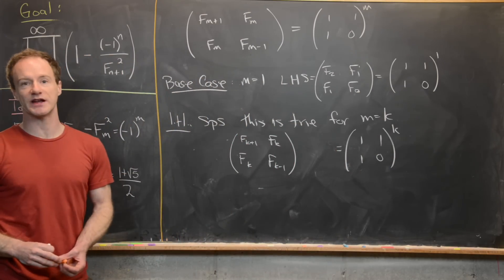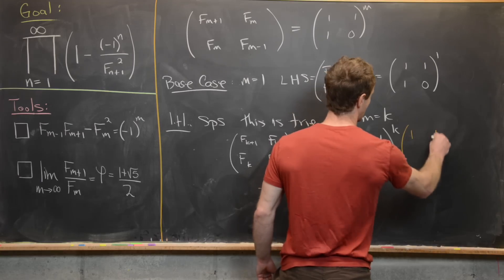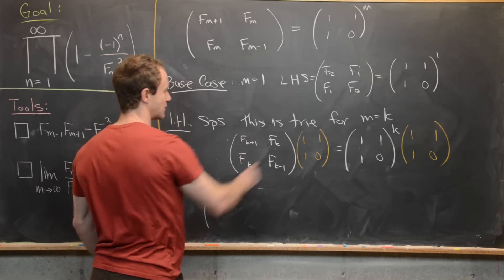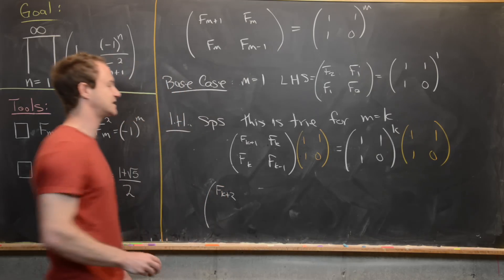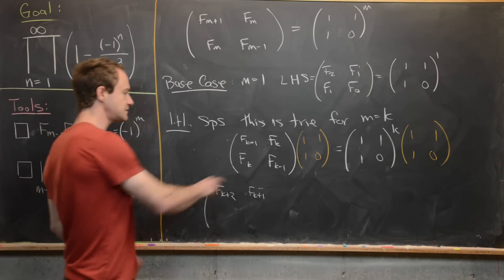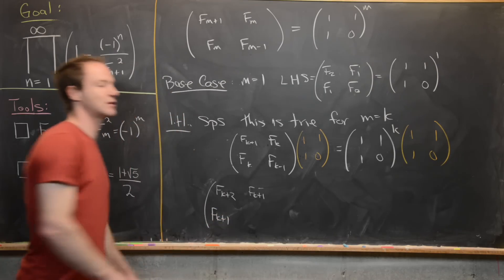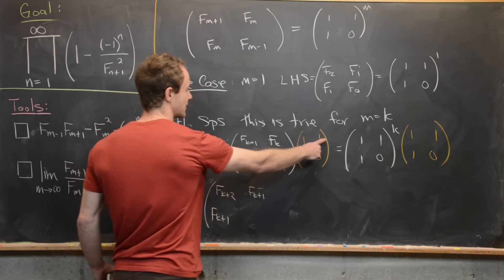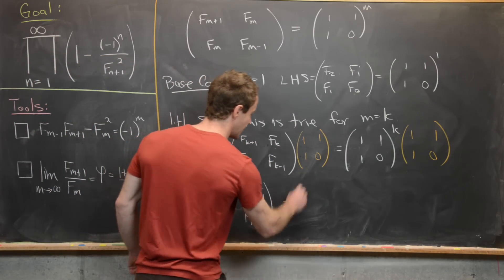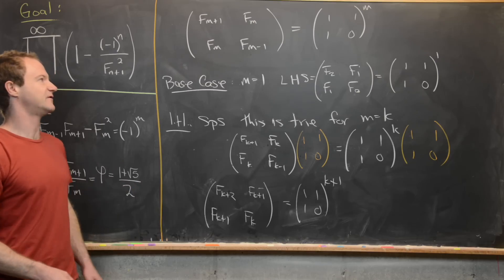We right-multiply both sides by [[1,1],[1,0]]. For the left-hand side, the upper-left entry is F_{k+1} plus F_k, which by the recursion is F_{k+2}. The upper-right entry is F_{k+1}, the lower-left entry is F_k plus F_{k-1} which is F_{k+1}, and the lower-right entry is F_k. On the right-hand side, we now have [[1,1],[1,0]] to the k+1 power, which is exactly what we needed to complete the induction.